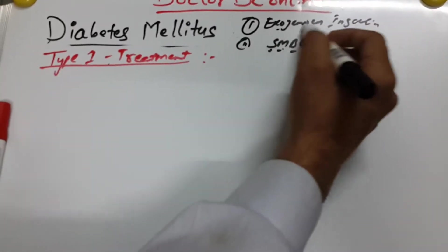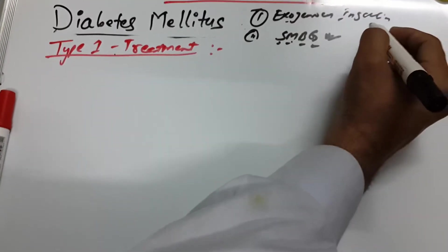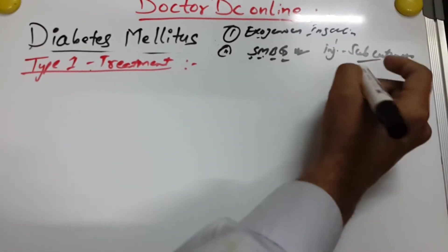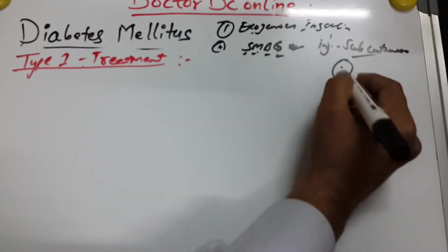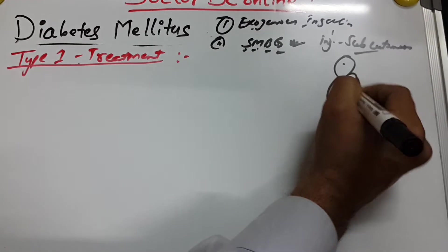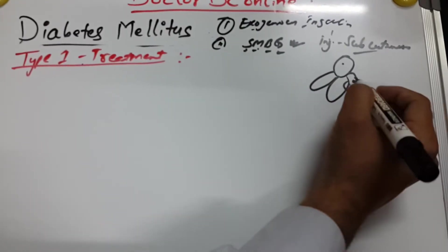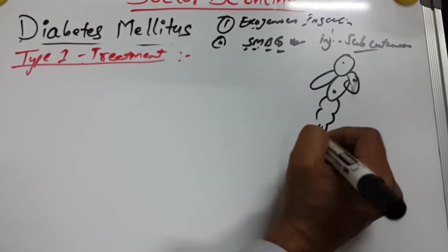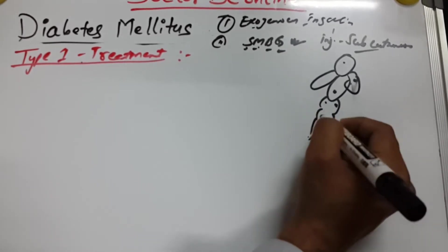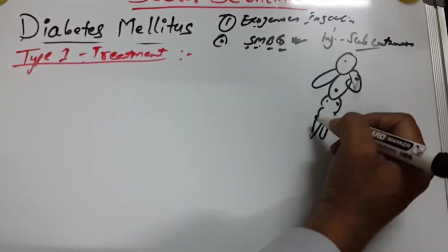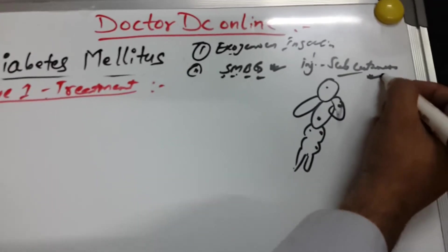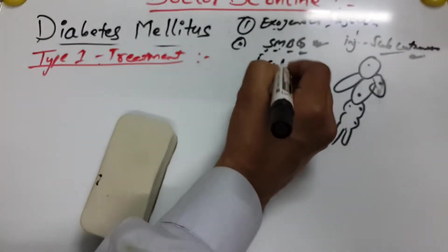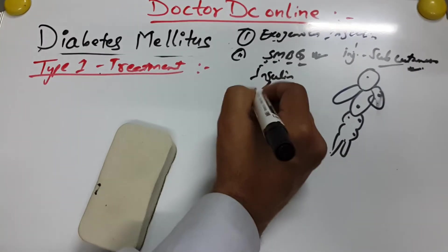We will give exogenous insulin by injection — subcutaneous injection. The injection sites include the upper outer arm, the vortex area, and the upper thigh. There are two kinds of insulins we will give: bolus insulin and basal insulin.